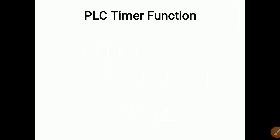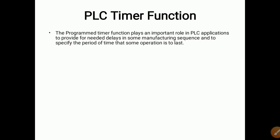So what is the PLC timer function? The program timer function plays an important role in PLC applications to provide for needed delays in some manufacturing sequence and to specify the period of time that some operation needs to last. It is used for creating delays in a manufacturing sequence — suppose you are manufacturing any product and want to create some delay in any operation, at that time we need a PLC timer.